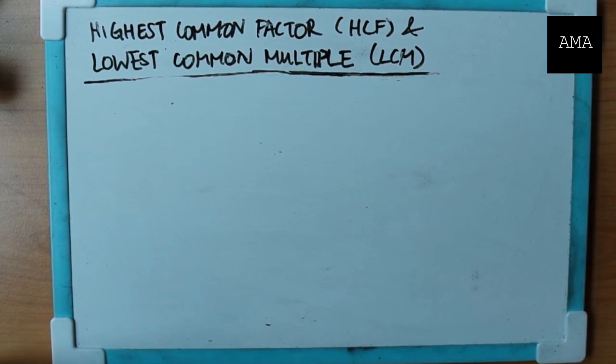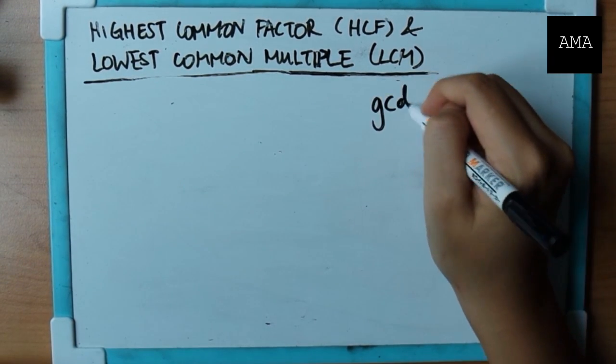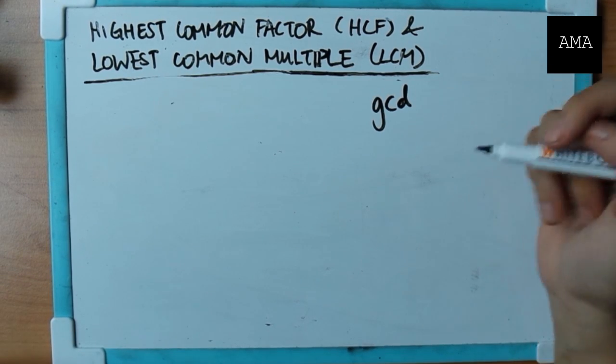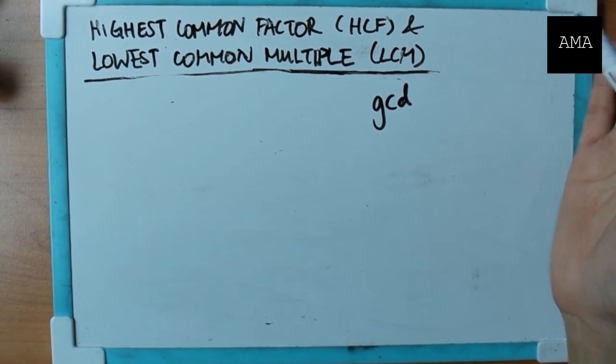Some of you may understand HCF as Greatest Common Divisor, which is GCD basically. So there are two methods to find the GCD and HCF. They're the same thing.